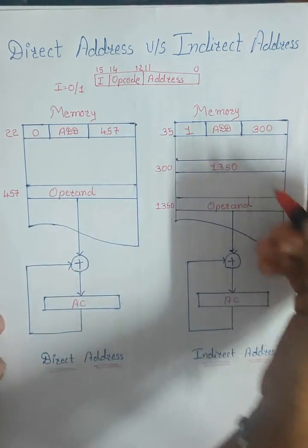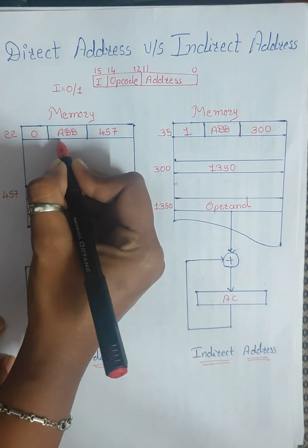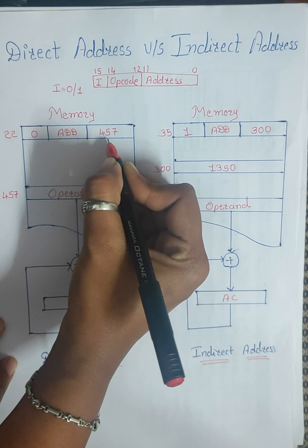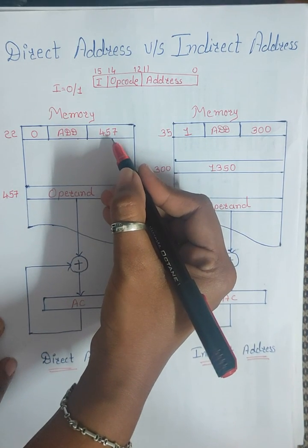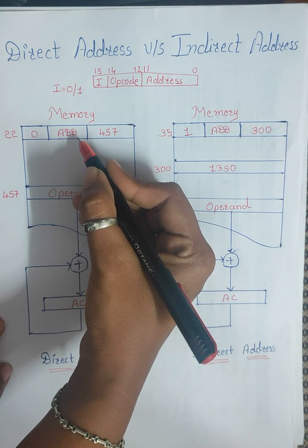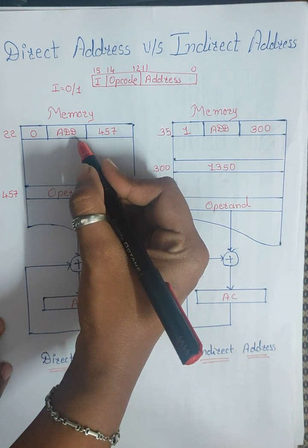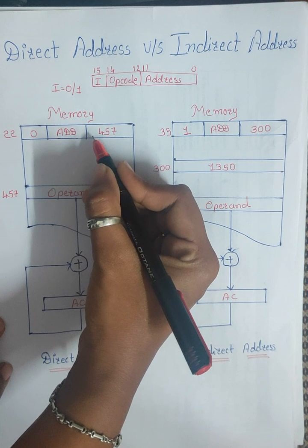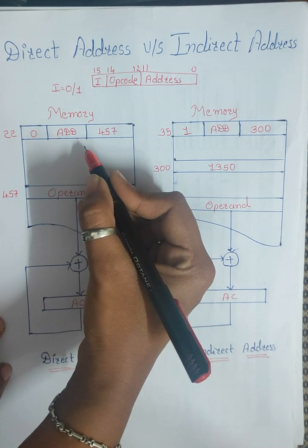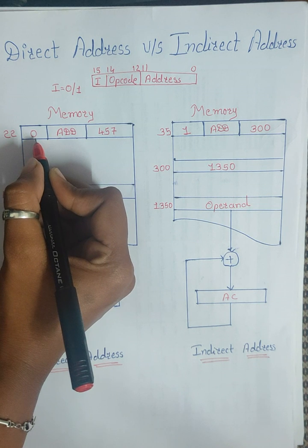Now let us see this diagram. Suppose we are having this instruction — it's an ADD instruction — and here the address is 457, a 12-bit address. ADD means I need to add the data along with the data available in the accumulator. Keep in mind that whatever instructions are performed, they are performed with the data available in the accumulator. So ADD means addition will be performed with the given data along with the data in the accumulator. The 15th bit being 0 represents that this is the direct addressing mode.